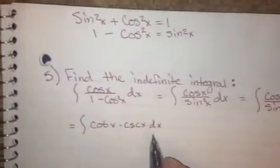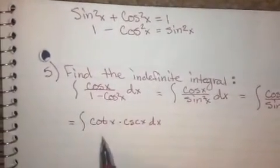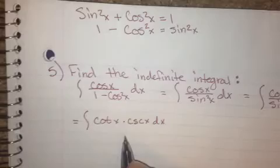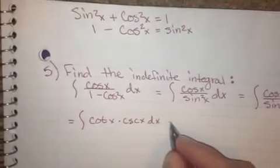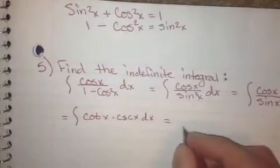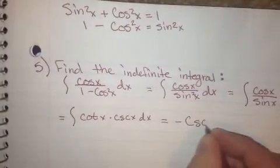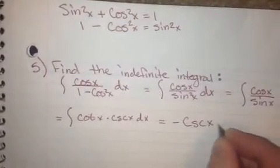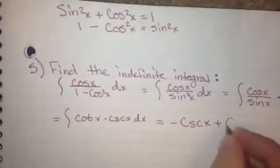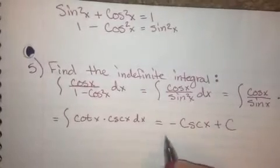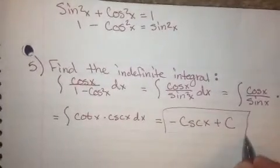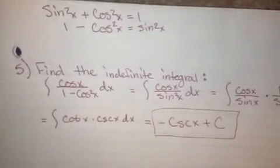The indefinite integral of cotangent x cosecant x is negative cosecant x plus C. And that there is our answer.